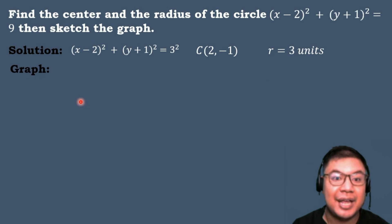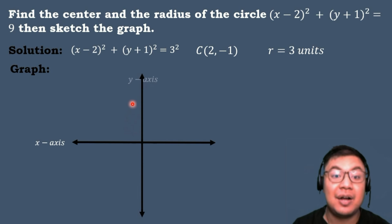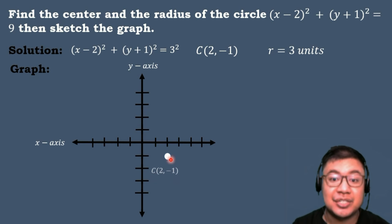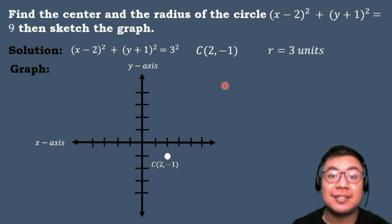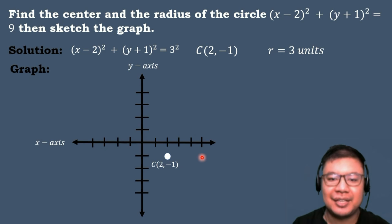We will now sketch the graph by constructing the x-axis and y-axis. We plot the center point at coordinates (2, -1): move 2 units right and 1 unit down. To get the four radius points, we count out 3 units in every direction from the center. Going right: count 1, 2, 3 — the first radius point is at (5, -1). Going upward: count 1, 2, 3 — the second radius point is at (2, 2).